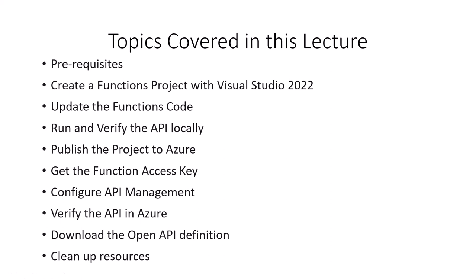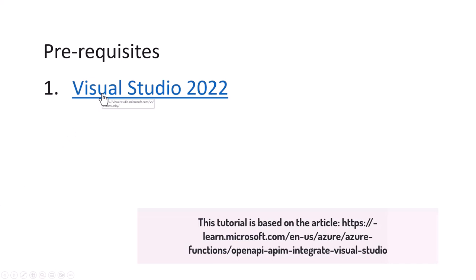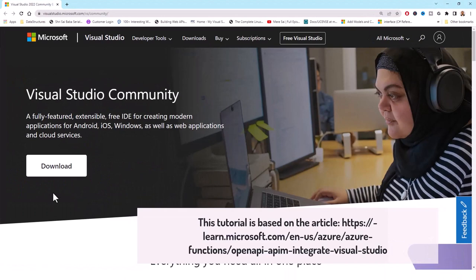Let's switch over to Visual Studio 2022. Before that I'll show you the prerequisites and where to install them. We use Visual Studio 2022 Community Edition in case you don't have it installed. I've got a link here — click on it and it will bring you to the Visual Studio Community download page. I will put this link in the description of this video so you can download Visual Studio Community Edition.